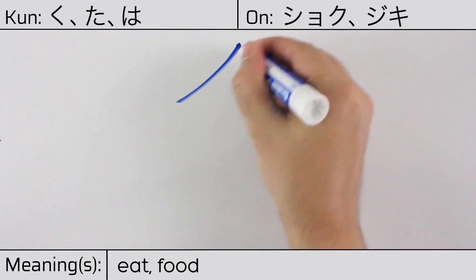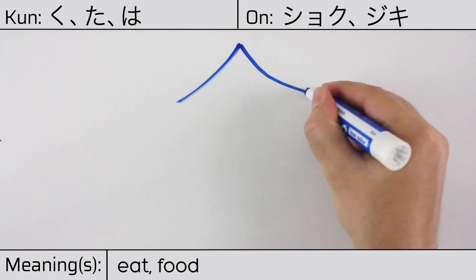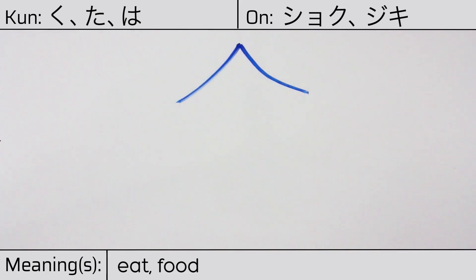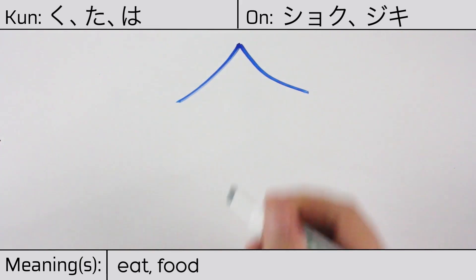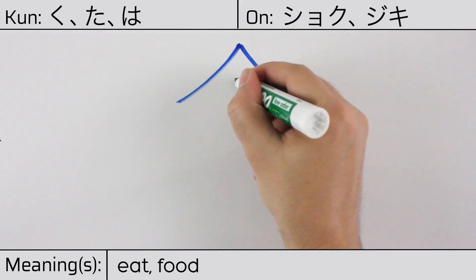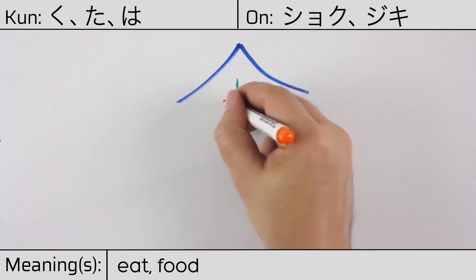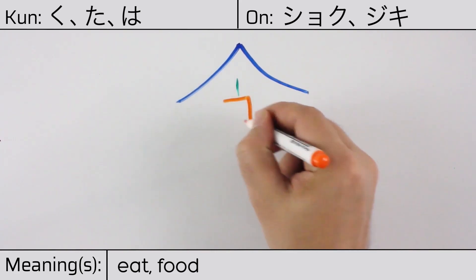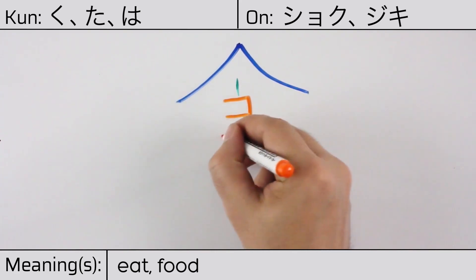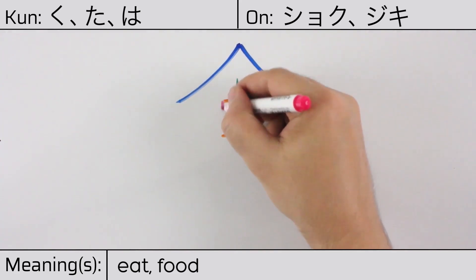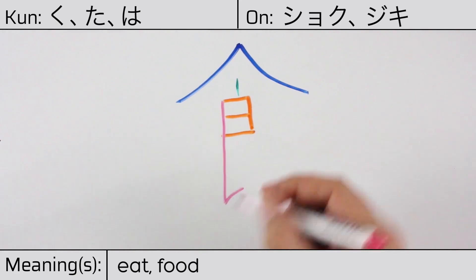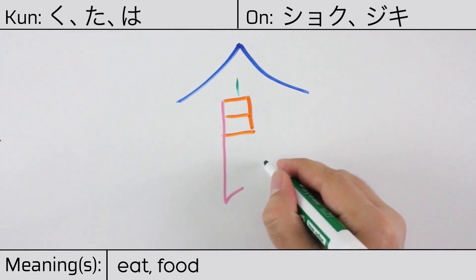This character is made up of the following radicals or parts: a hat or lid radical, which is a stylized version of hito or person, known as hitoyane, and the character meaning good. You can remember this kanji by the following hint: eating is good for people.